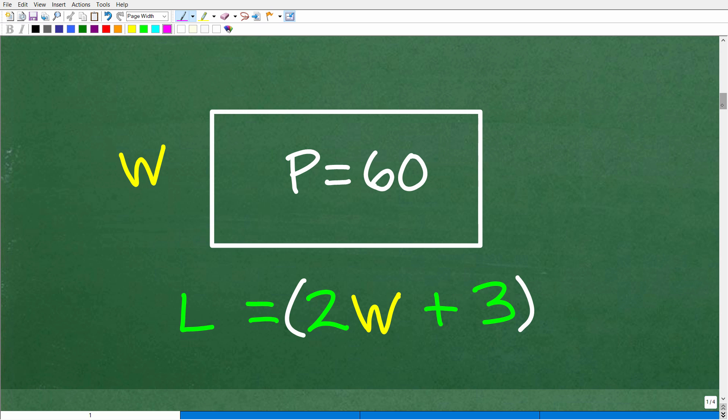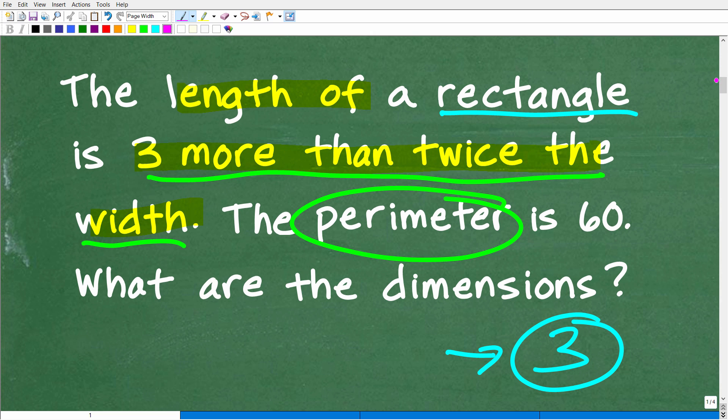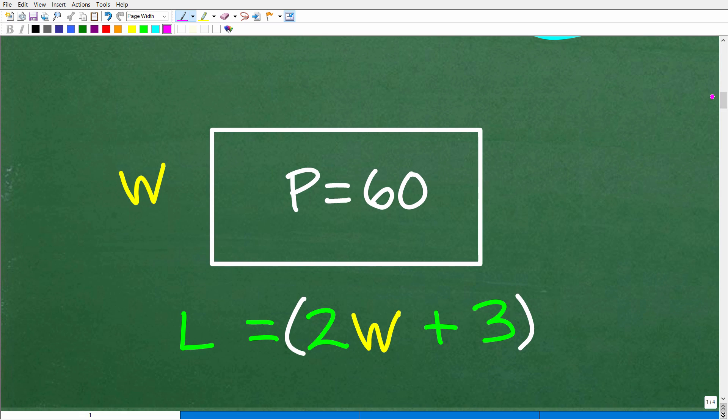Going back to the problem, we have the width and the length. We have information about the length and the width of this rectangle. The length of a rectangle is defined by the width. It's three more than twice the width. So let's put a W here to represent the width.